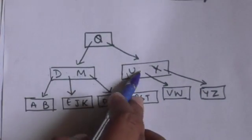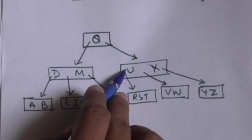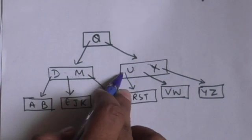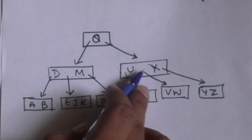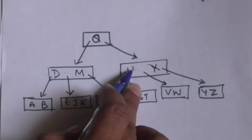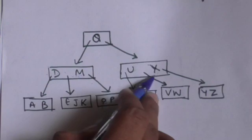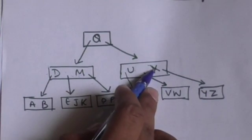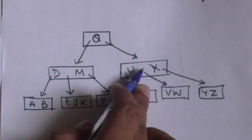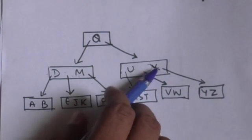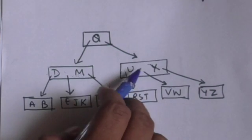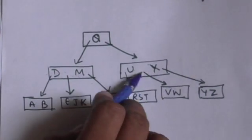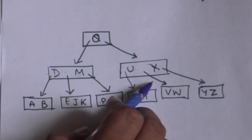We compare V with the first key of this node. The first key is U, and V is greater than U, so we move to the next key of this node. The next key is X. V is smaller than X, so we will move to the child node which is at the left of key X.